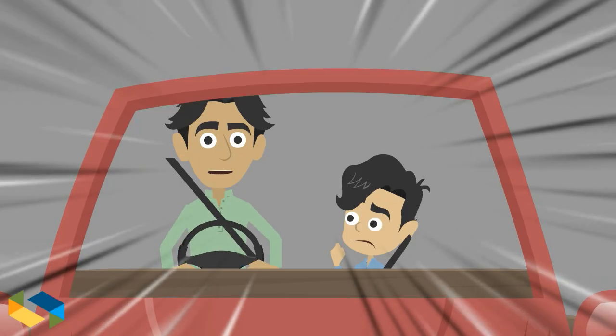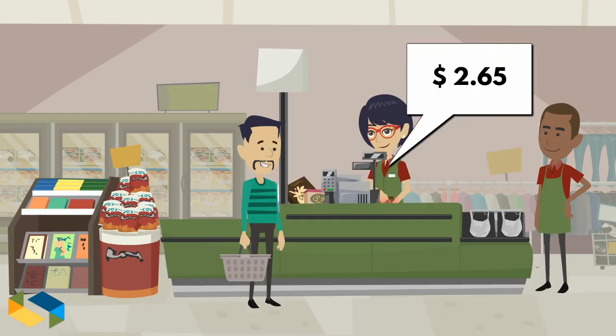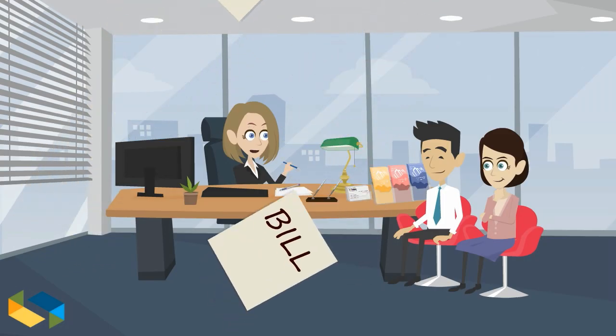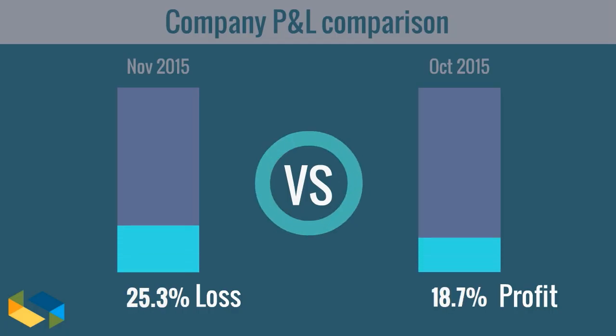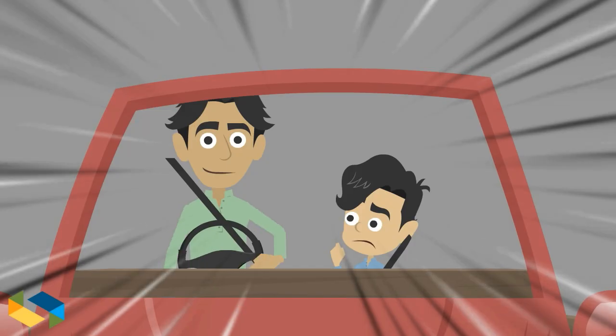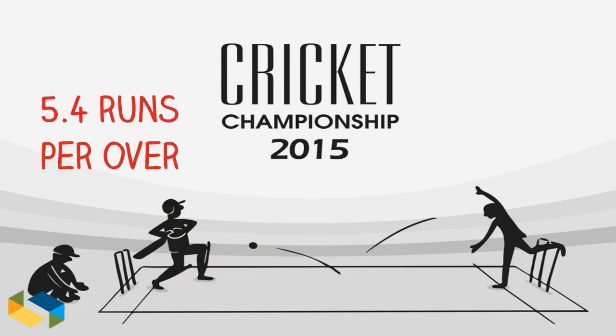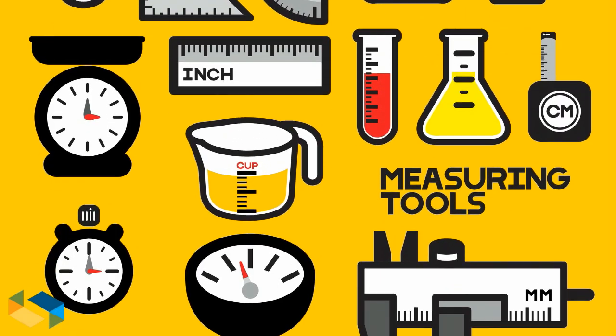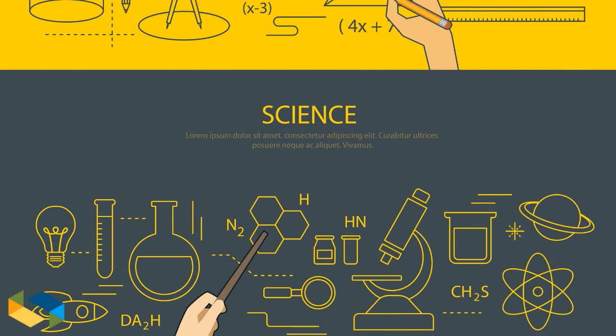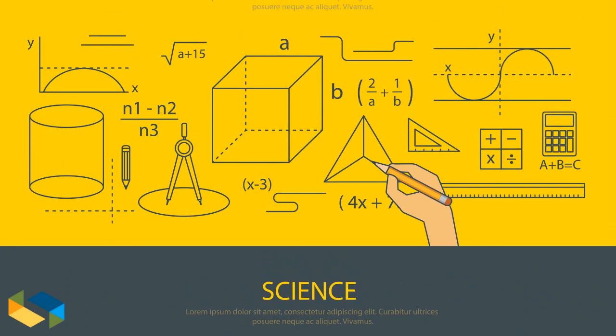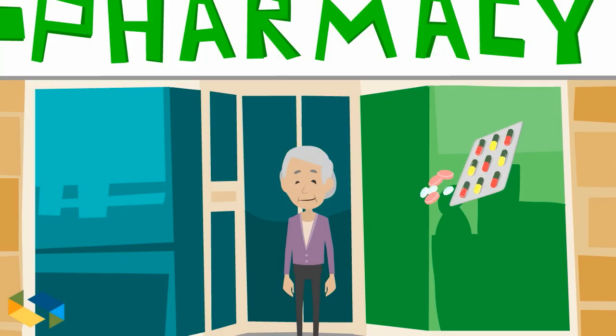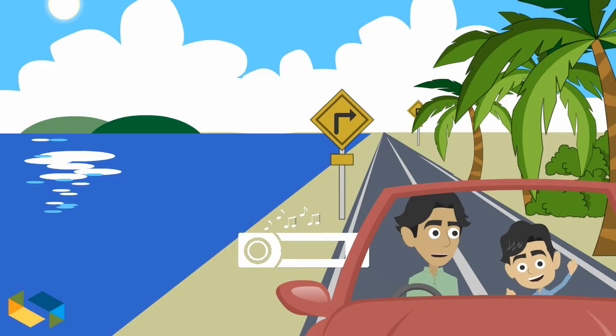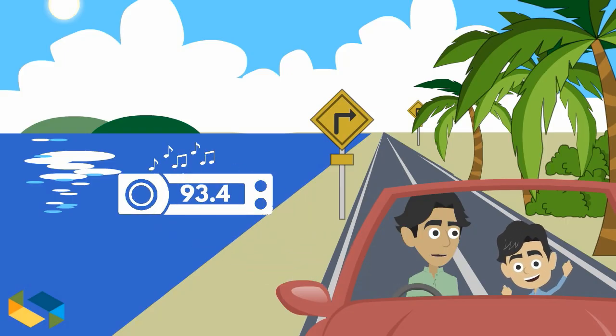You better do, as you will come across decimal numbers almost everywhere in your life. For example, prices of items you buy or sell, tax calculations, profits and losses, basically wherever money is involved, batting averages in sports, sizes and measurements of all types, scientific and mathematical calculations, your grandma's medicine dosage, even your radio station frequency numbers are in decimal form.